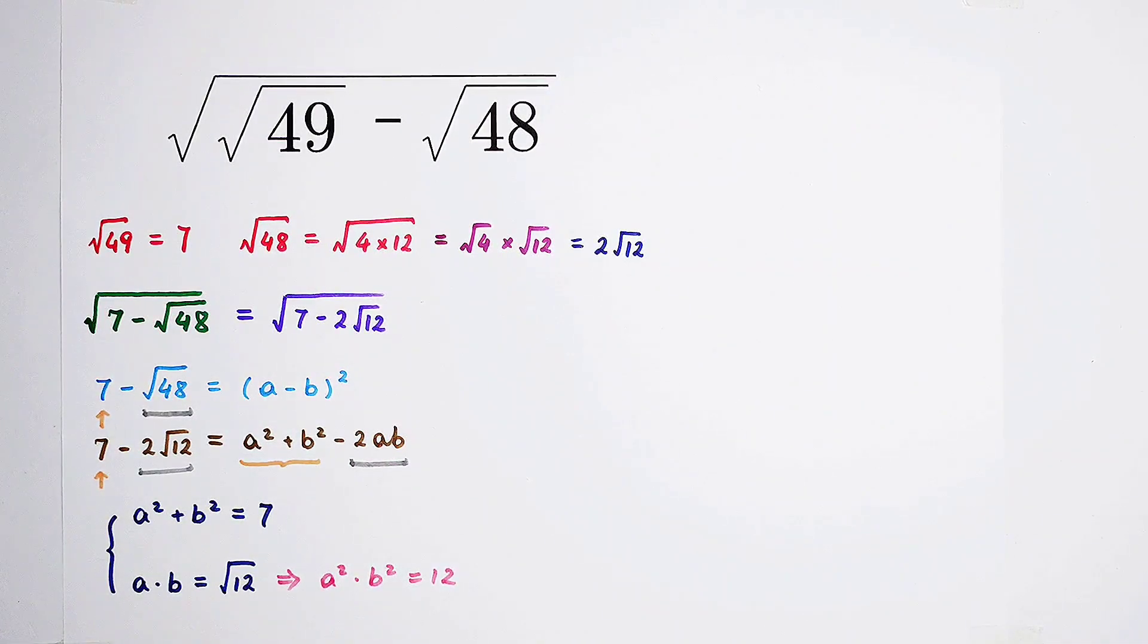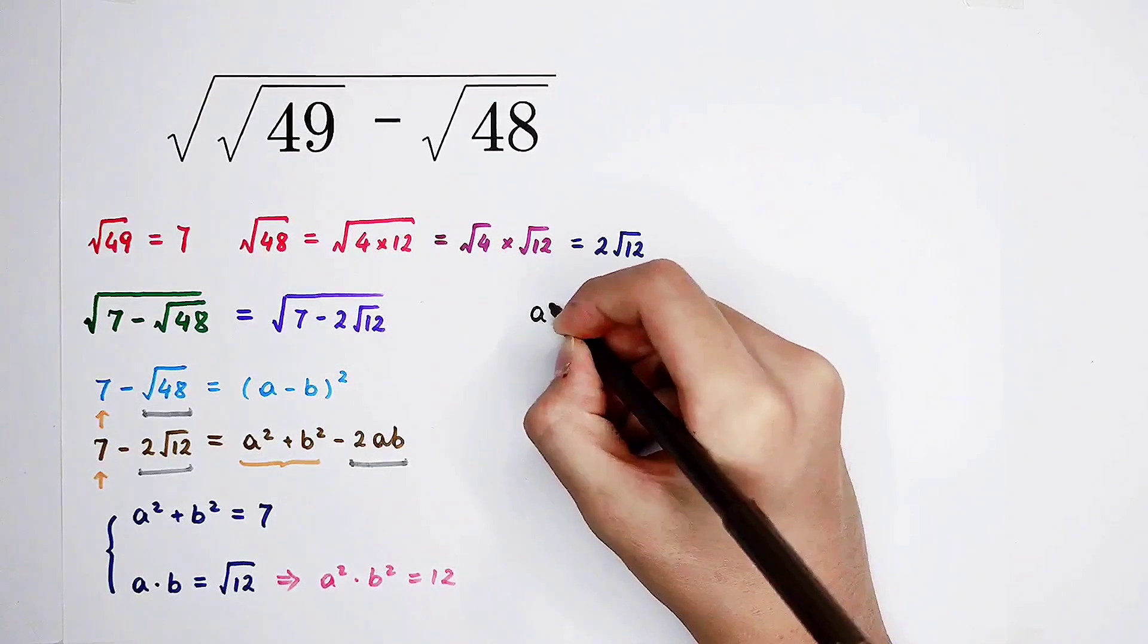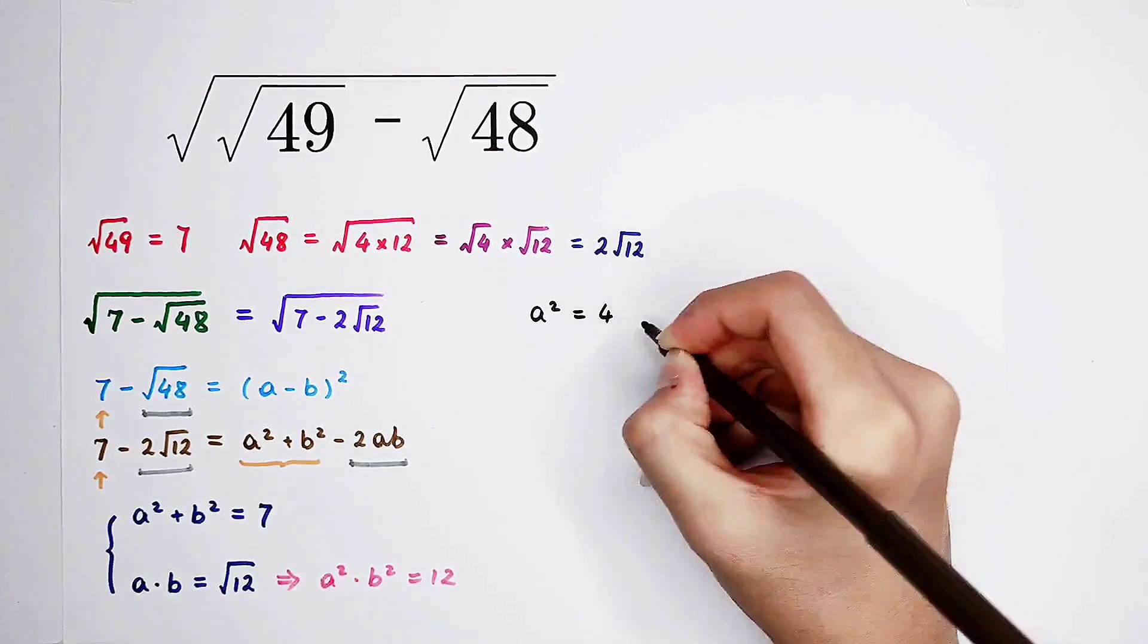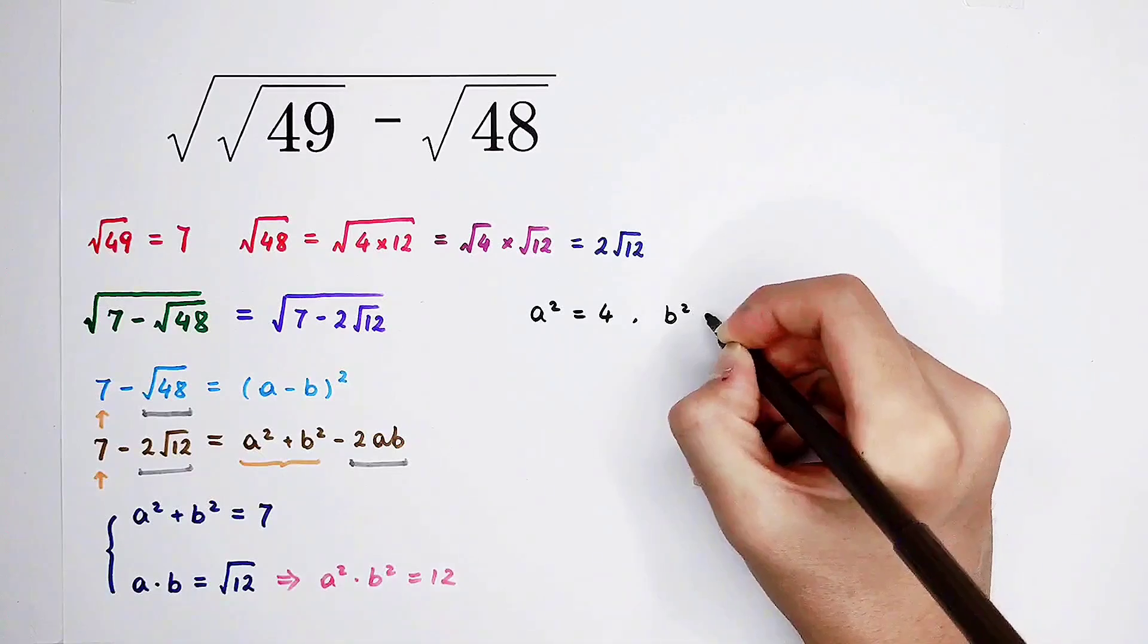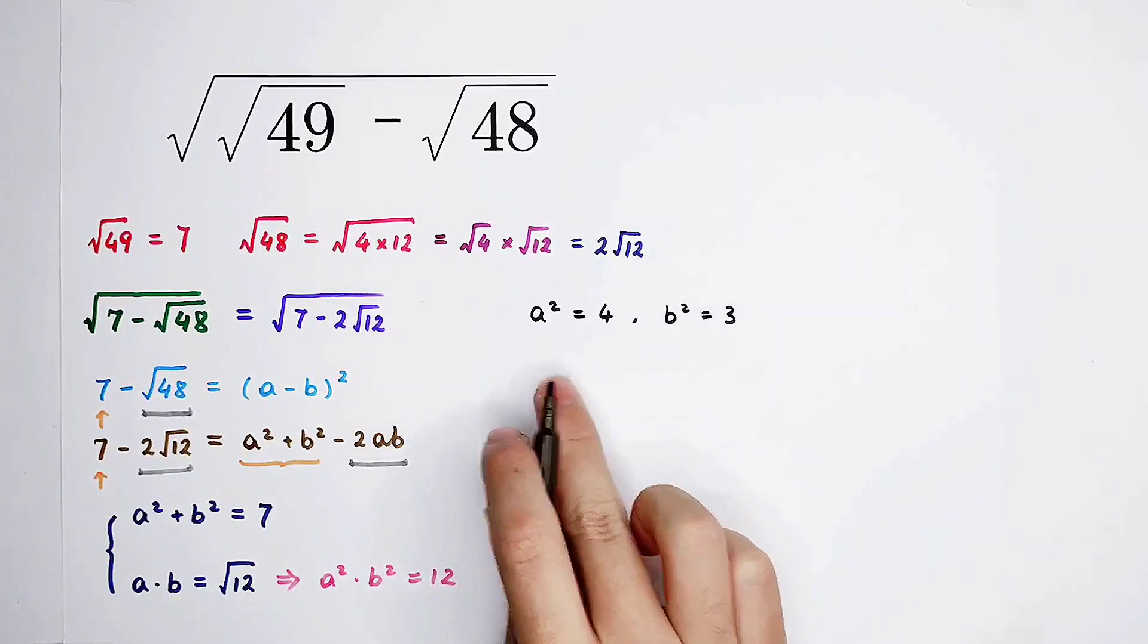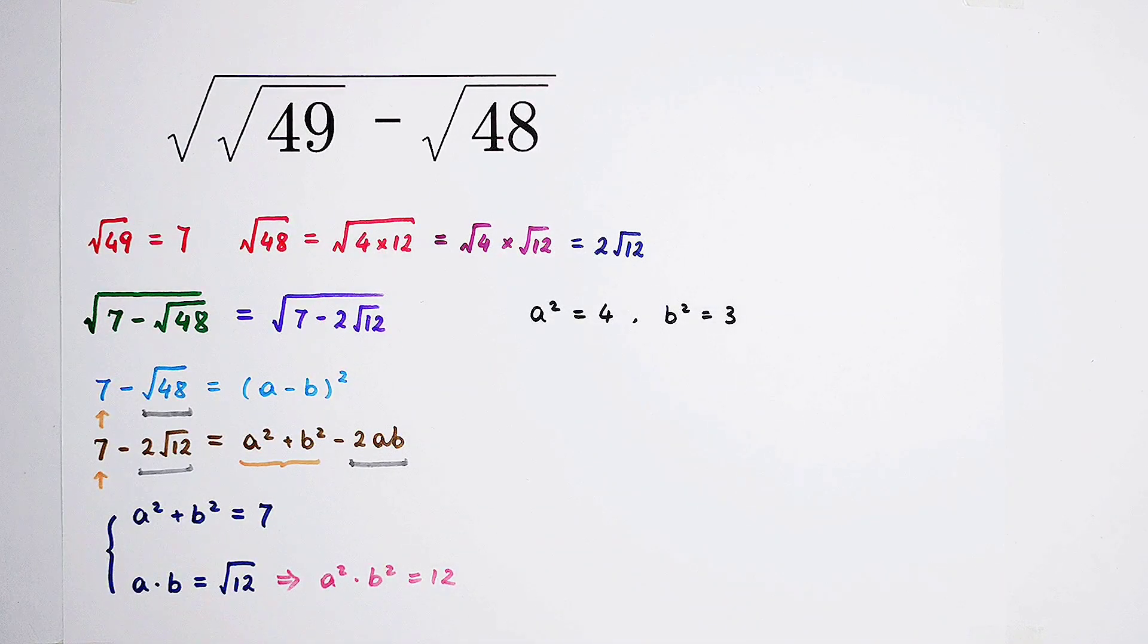So it doesn't matter. We only have to solve for positive a and positive b. So we only have to find two numbers whose addition is 7 and product is 12. It is very simple and easy. 12 can be written as 4 times 3, and 4 plus 3 is 7. Oh my god. Magic. So that means a² should be 4, b² should be 3, or a² is 3, b² is 4. That doesn't matter.